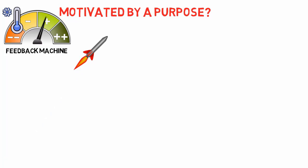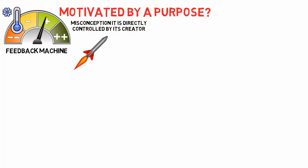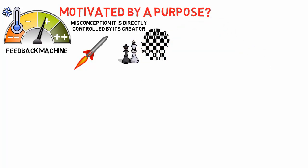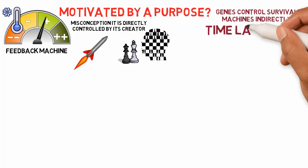A common misconception is that because guided missiles are created by humans, they are under the immediate control of a conscious human being. Similarly, computers programmed to play chess can only do what the human programmer tells them. Likewise, this parallels the fallacy that genes can only directly control the behavior of their survival machines. In fact, genes can control the survival machine only indirectly by setting up the machine and then sitting passively, because of the time lag effect.